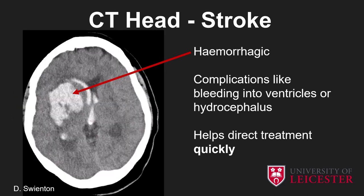Moving on to stroke, which forms about 30% of the scans we do in ED. This is a hemorrhagic stroke, typically associated with hypertension, centred on the basal ganglia. We can see the bleed — blood shows up very well on CT — but we can also assess for complications. Here you can see blood has extended into the ventricular system; this patient will be at risk of hydrocephalus. Ventricular dimensions are very easy to see on CT. The real strength of CT, particularly in stroke imaging, is it helps direct treatment quickly — you get a very quick real-time decision with the aid of CT.